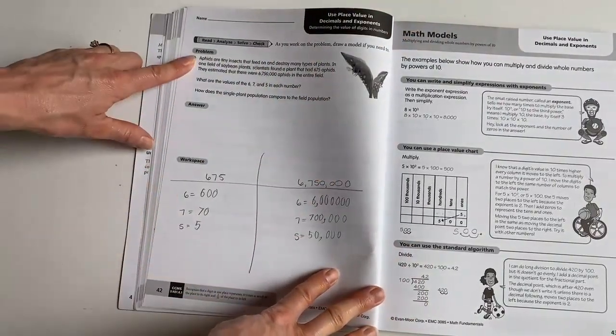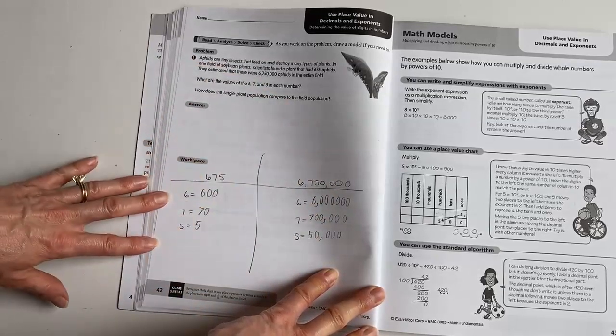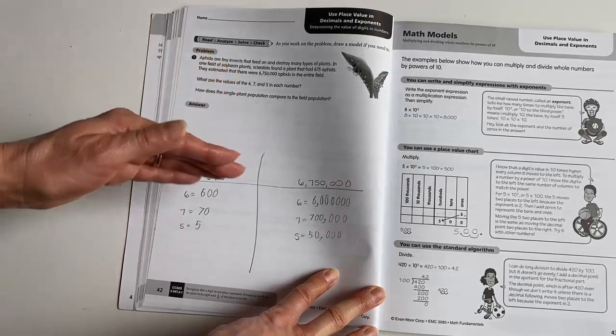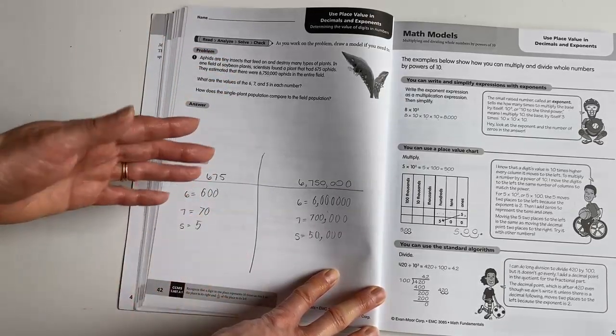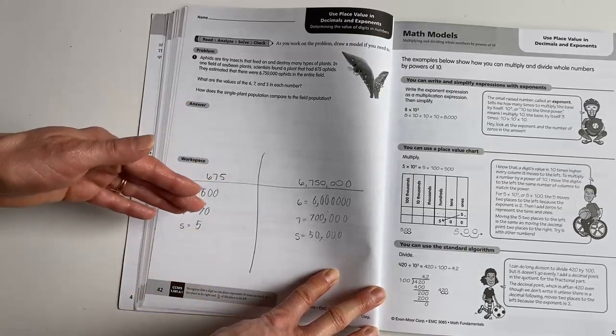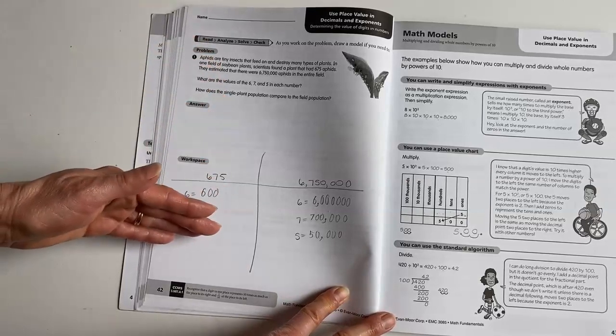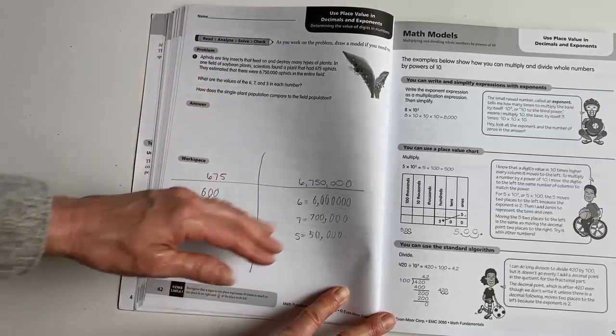And then at the end, there is a word problem and they're supposed to draw and show their work. And the reason why we want them to show their work is because we want them to be able to communicate their critical thinking steps so that one, if they get off track, then it's really easy for us to help them see where they made the mistake. But it's also really good for them to be able to communicate what they've learned with someone else when they can show their steps.